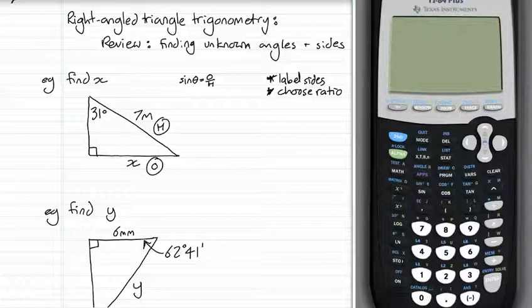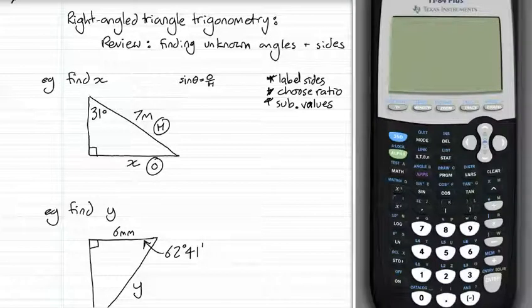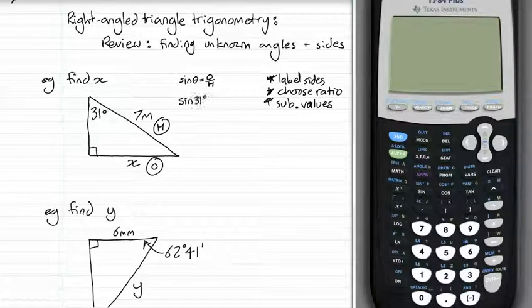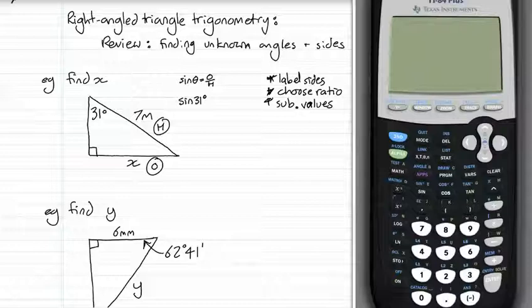Next step is always substitute the values. That is, sine of 31 degrees. Don't forget the degrees sign. Equals opposite is x. Hypotenuse is 7.